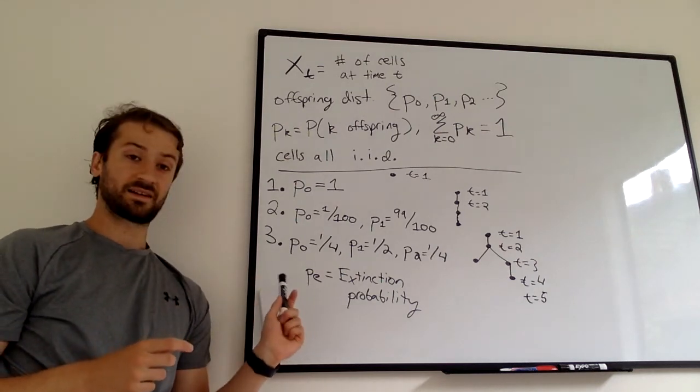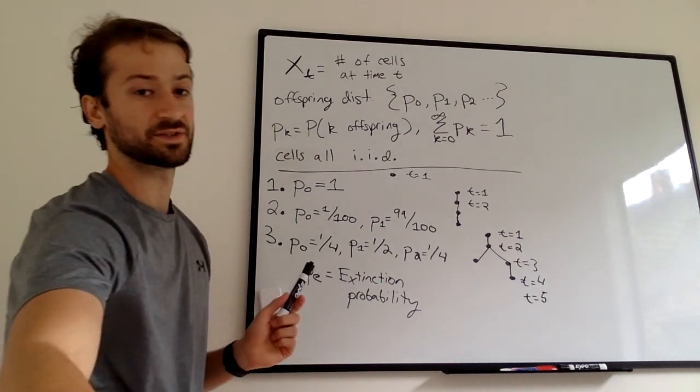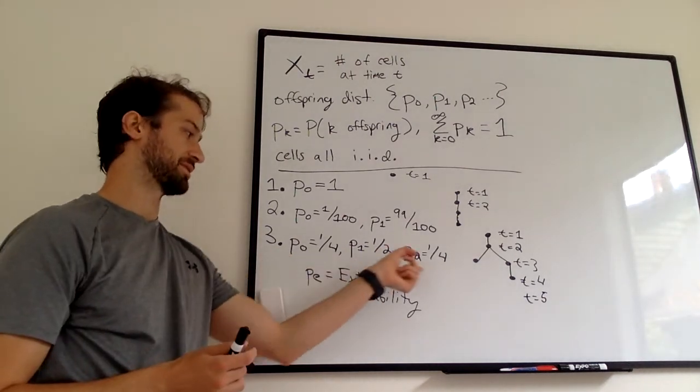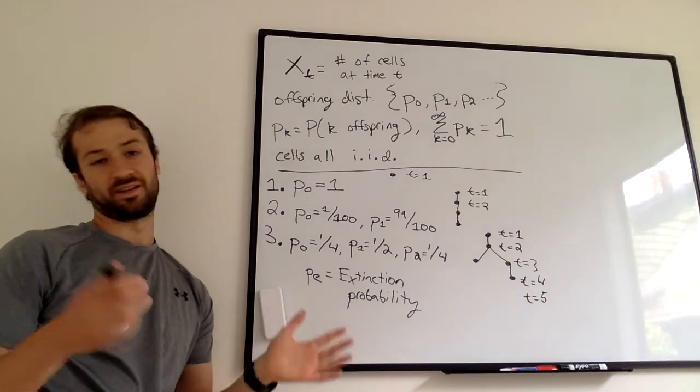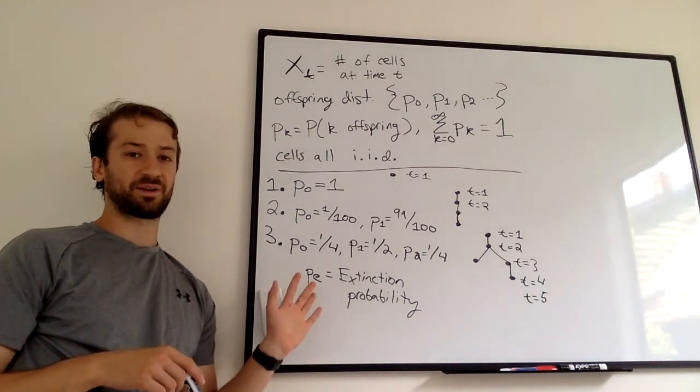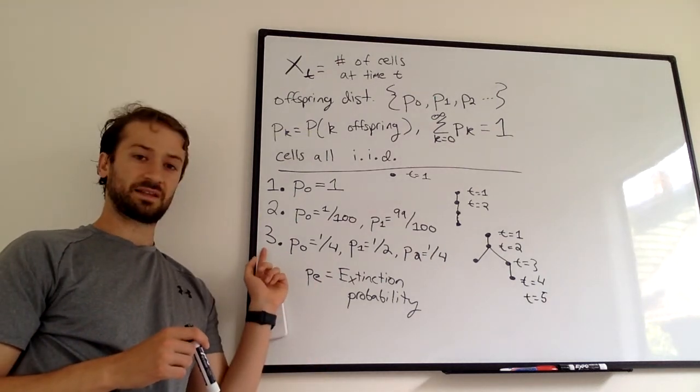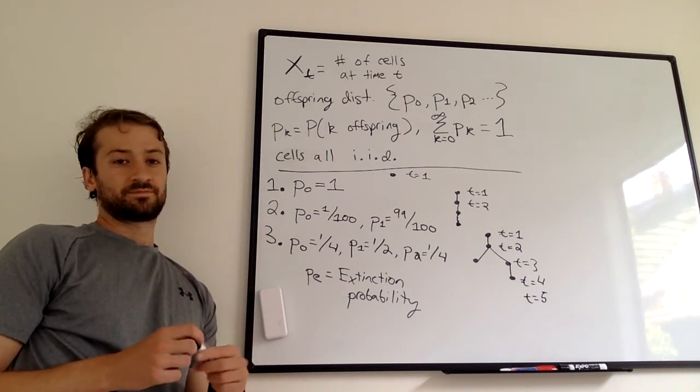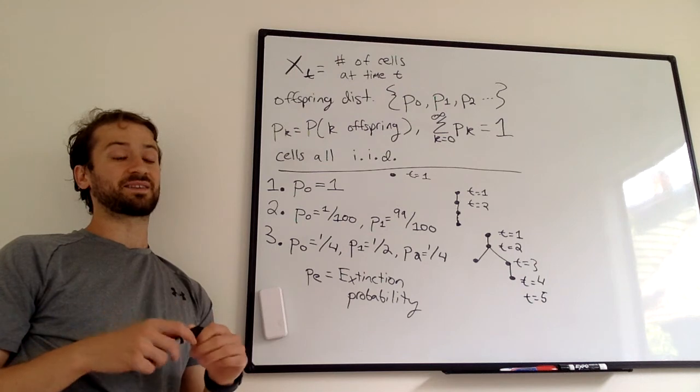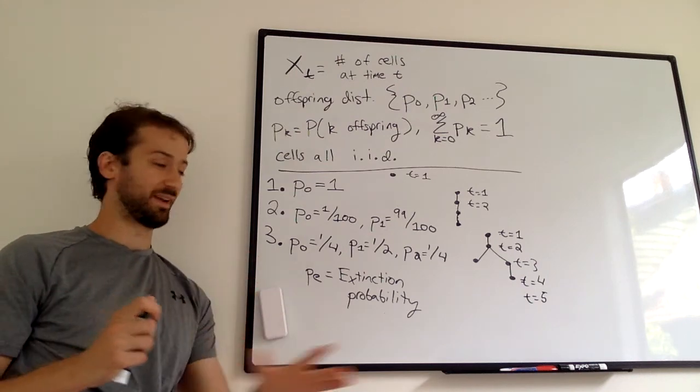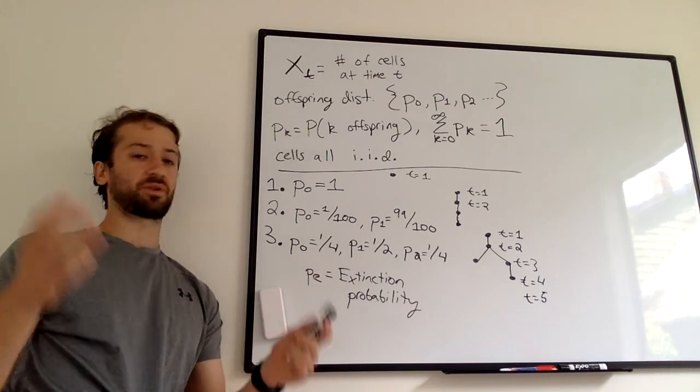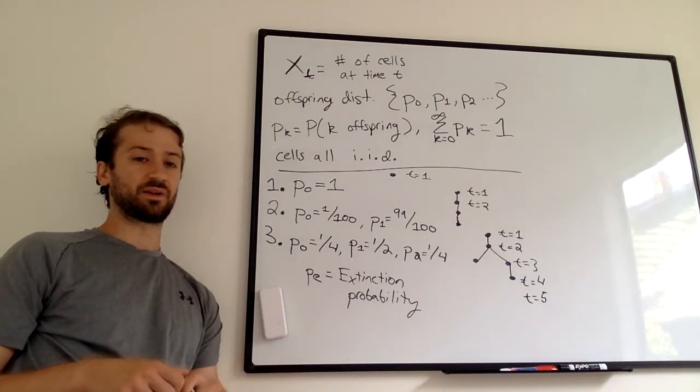But as an exercise to yourself, try to guess if this population will go extinct. So take a second, and I'll tell you the answer. Pause the video, think about this. Do you think this process will go extinct with probability 1? It can go extinct, but do you think it'll certainly go extinct, or are there scenarios where it will expand forever?